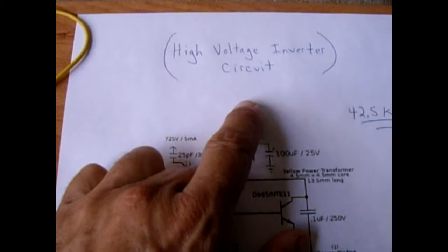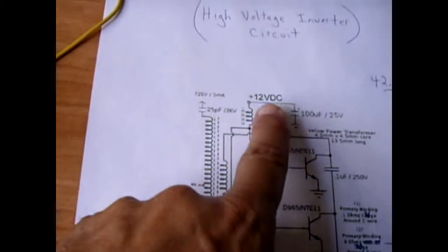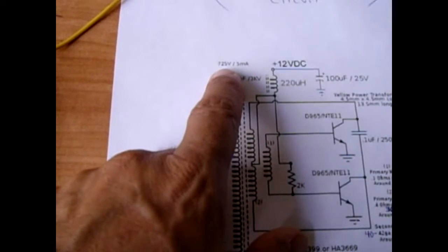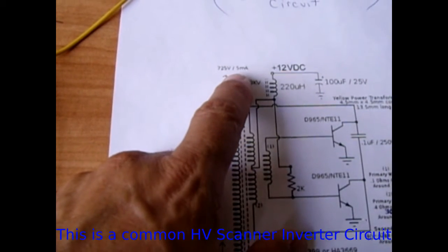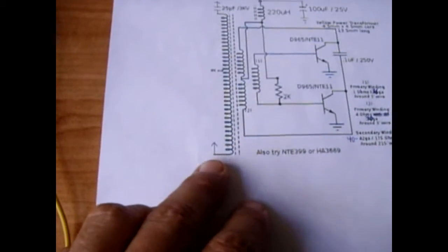Alright, in this video I'm going to show you how you can make a high voltage inverter circuit. It'll take roughly 12 volts and will supply approximately 725 volts at 5 milliamps.